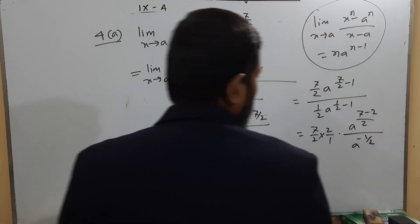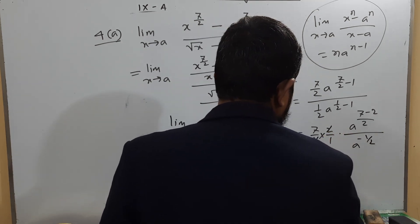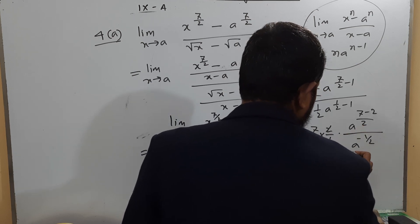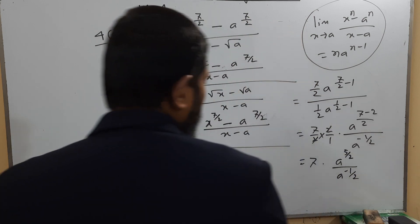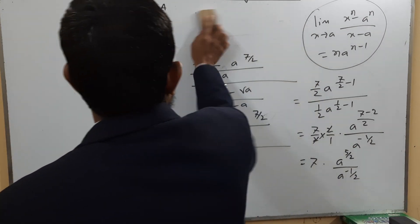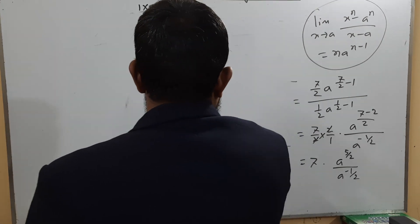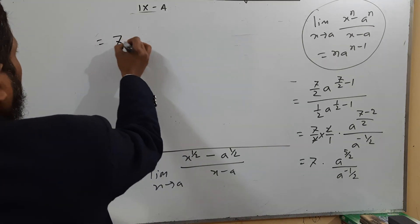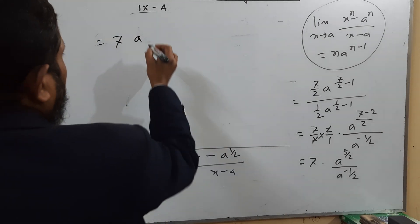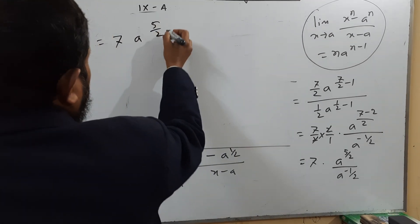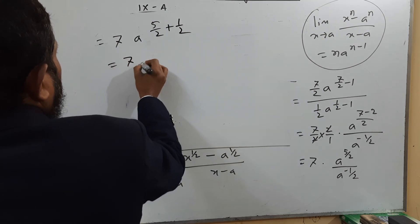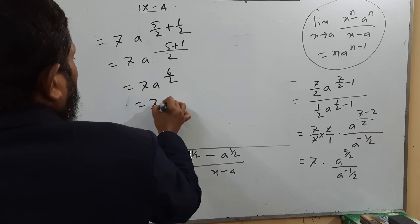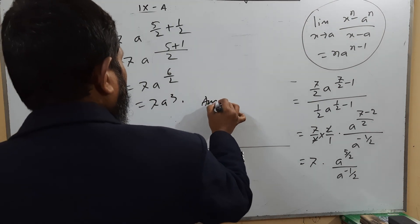Combining the exponents: 5/2 + 1/2 = 6/2 = 3. So the final answer is 7a^3. According to the rules of exponents, a^(5/2) ÷ a^(−1/2) = a^(5/2 + 1/2) = a^(6/2) = a^3, giving us 7a^3 as the answer.